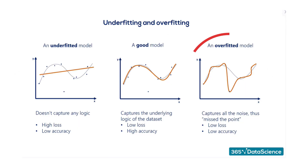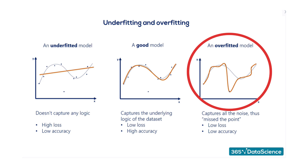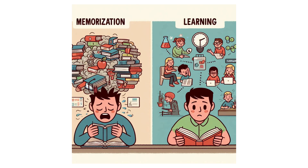Overfitting or underfitting? Overfitting happens when your model memorizes the training data instead of learning general patterns. It performs great on training data but fails on new examples — like a student who memorizes test answers without understanding the concepts.